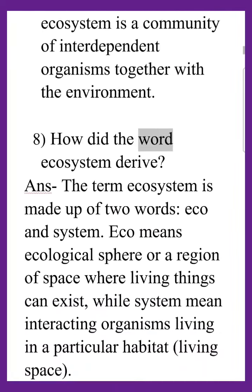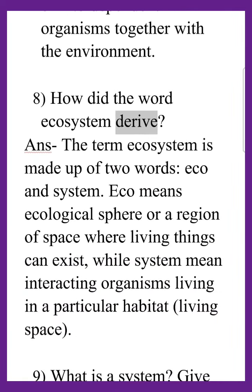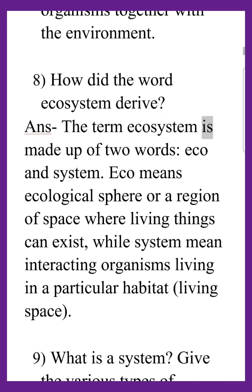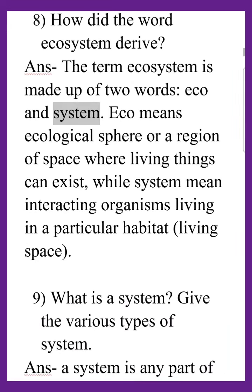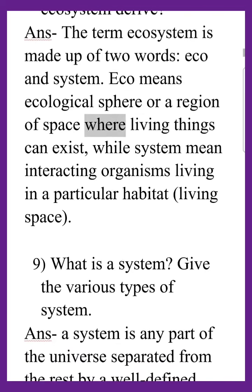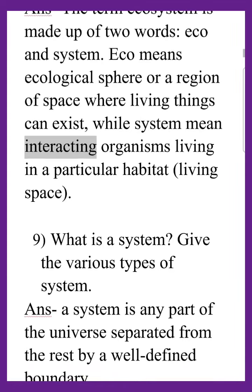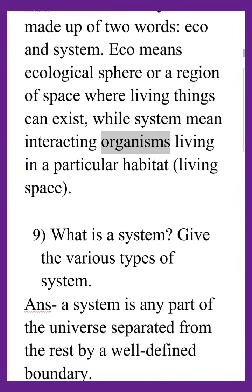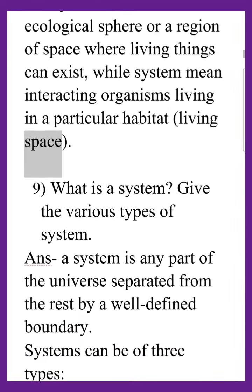How did the word ecosystem derive? The term ecosystem is made up of two words: eco and system. Eco means ecological sphere, or a region of space where living things can exist, while system means interacting organisms living in a particular habitat or living space.